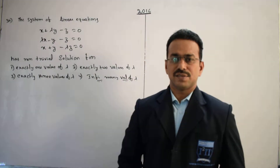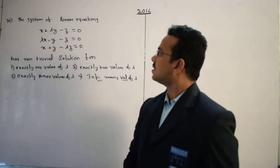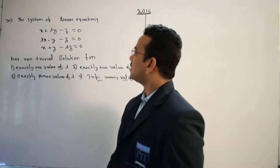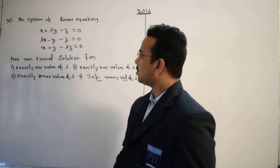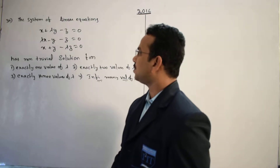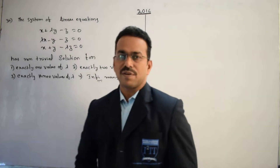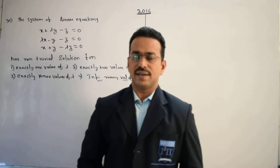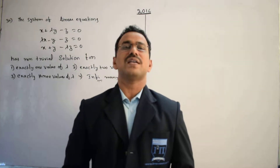Let's discuss the solution of the given question. The system of linear equations is: x + λy - z = 0, λx - y - λz = 0, and x + y - λz = 0, which has a non-trivial solution. Our task is to calculate for which values of λ the given system possesses a non-trivial solution.